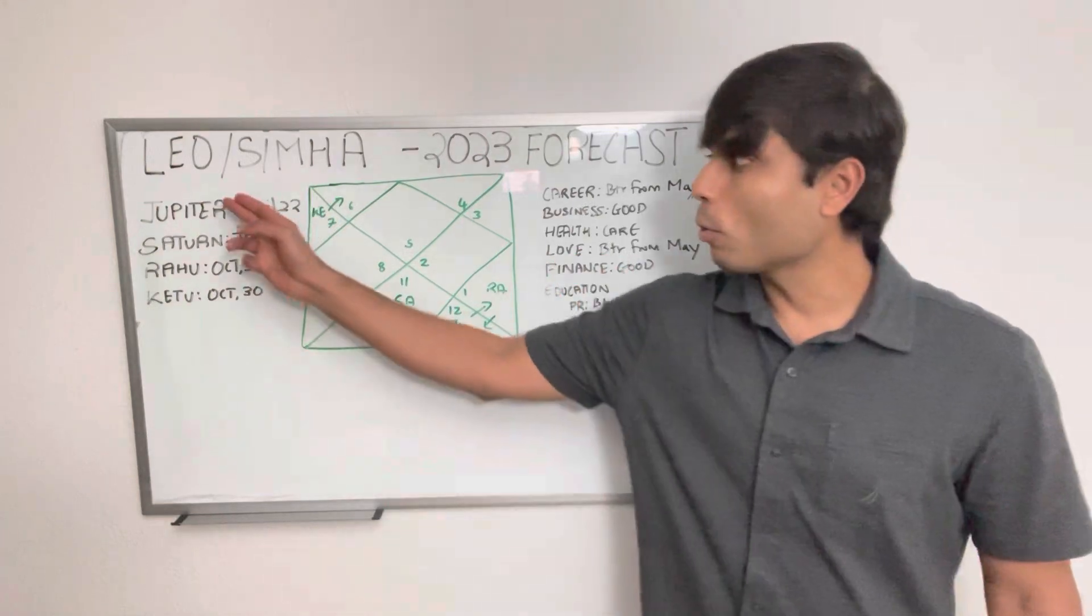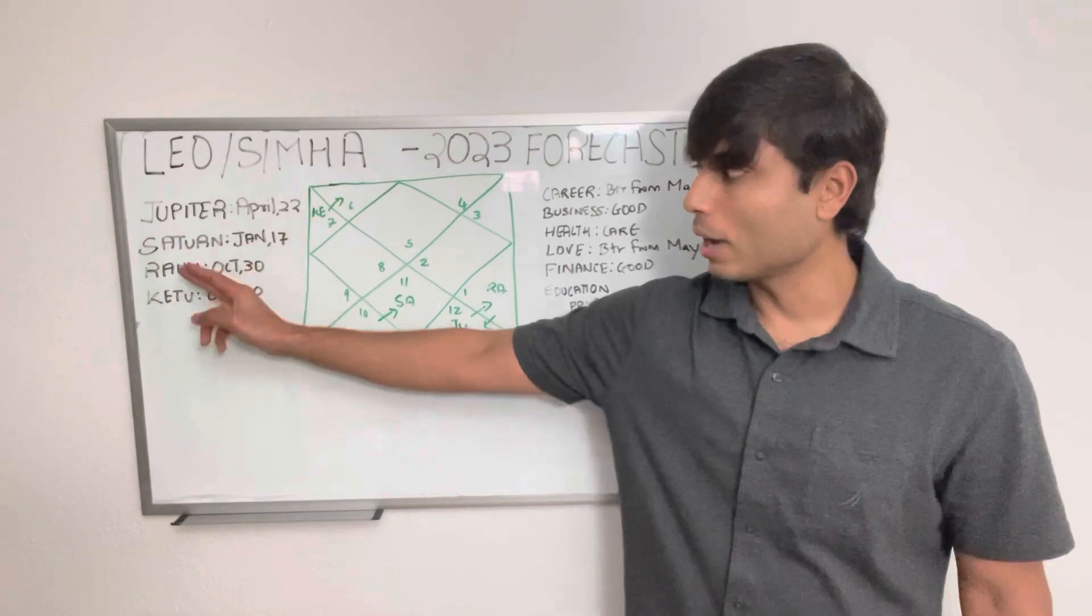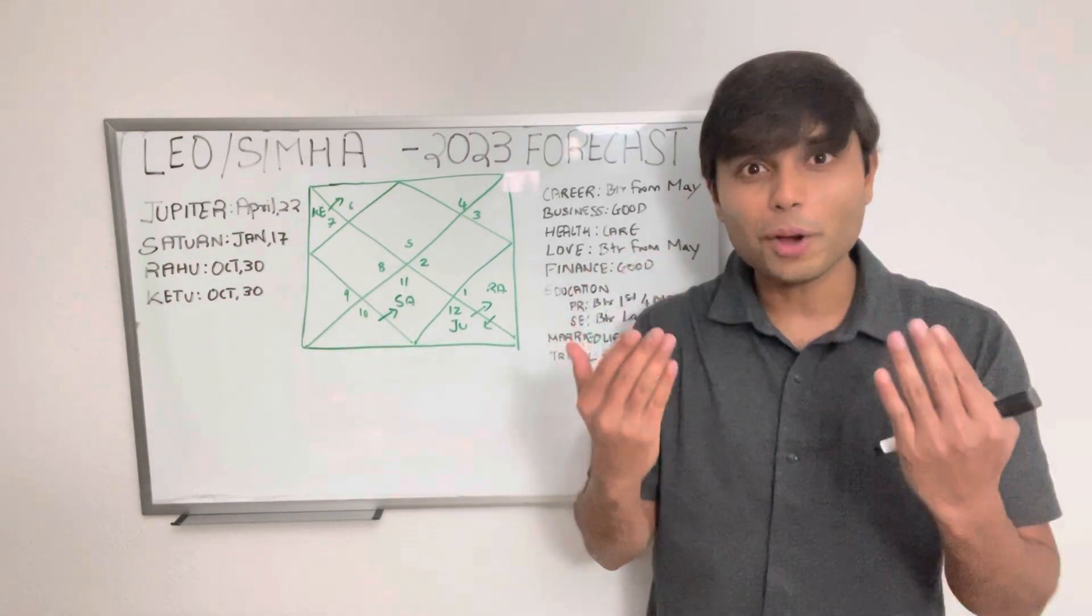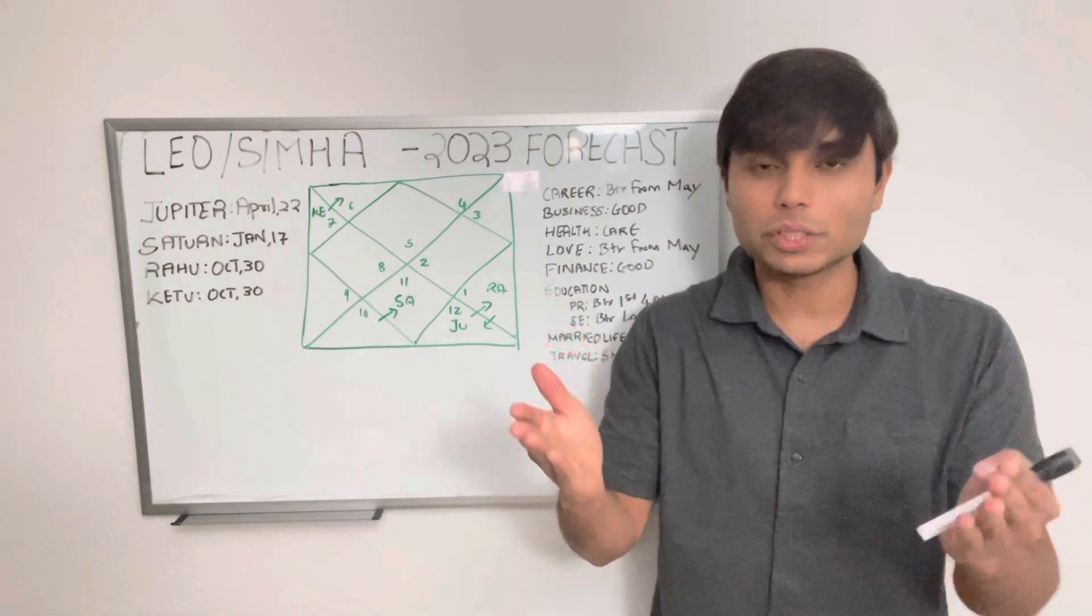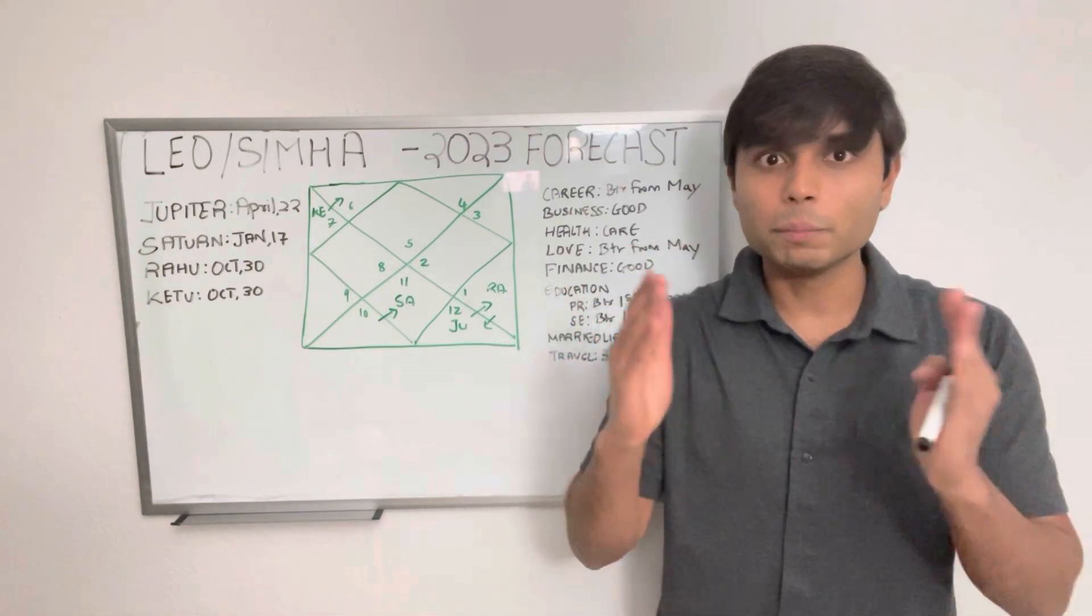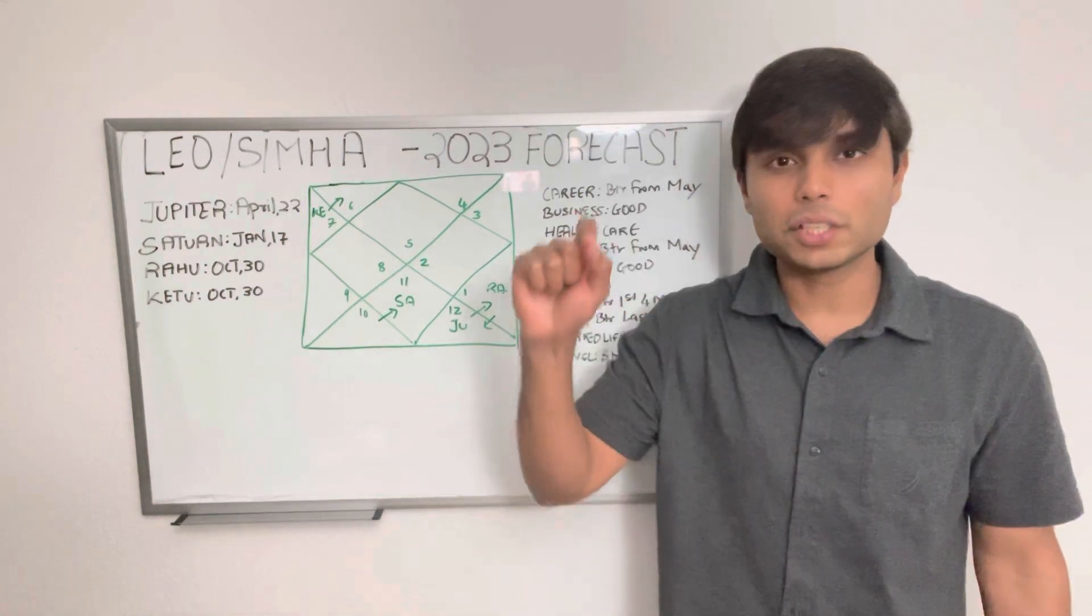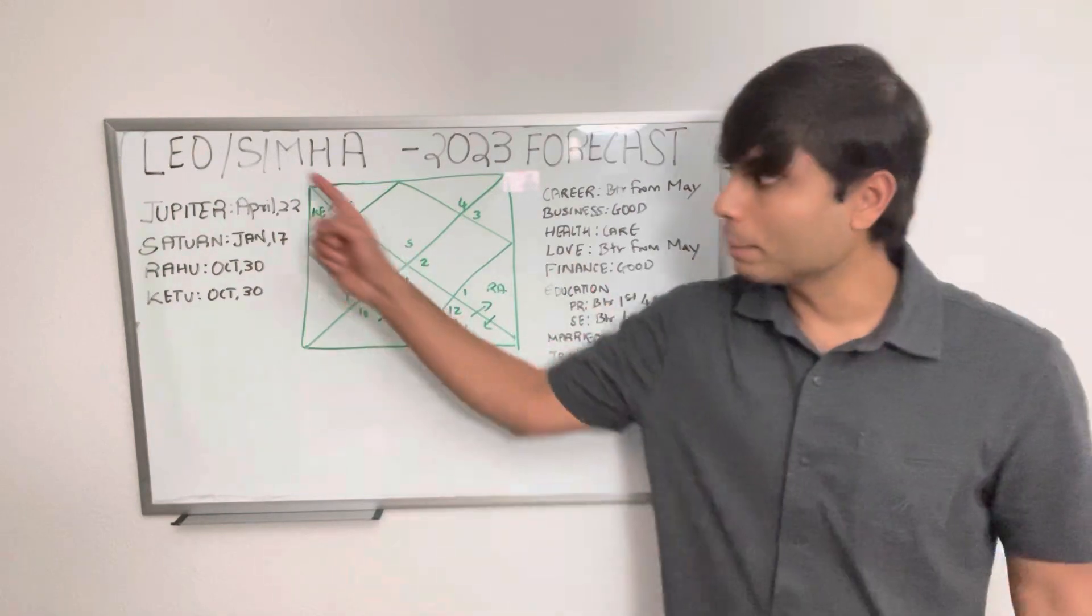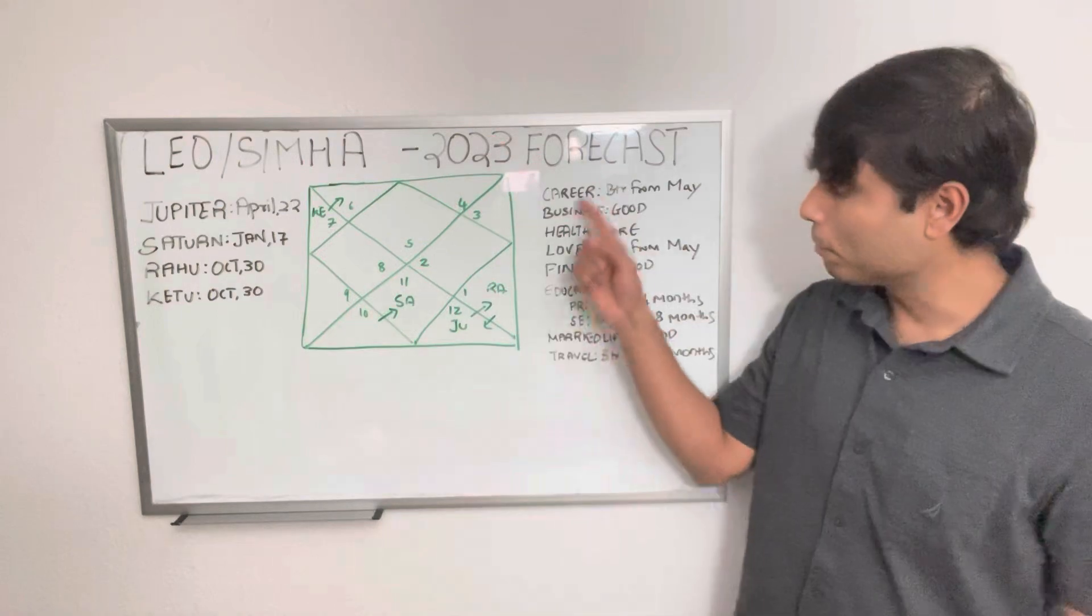When we look at annual forecasts, we focus on the four major planets: Jupiter, Saturn, Rahu, and Ketu, because they stay in one sign for a long period of time, so they have a strong impact on each individual's life compared to other planets such as Sun, Moon, Mars, Mercury, and Venus, which keep changing signs very quickly. Let us first take a look at the position of these planets in the new year, and then we will focus on the major areas of life.